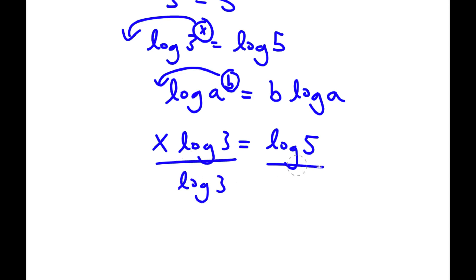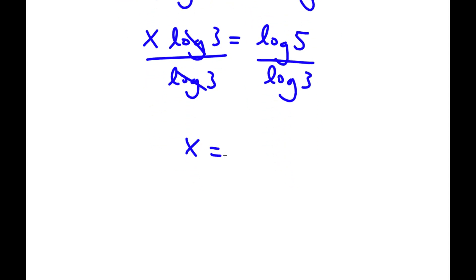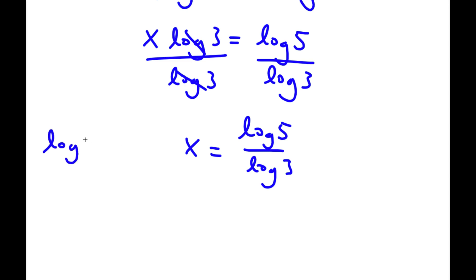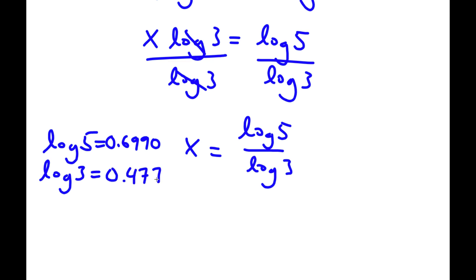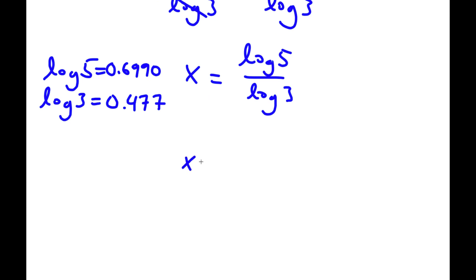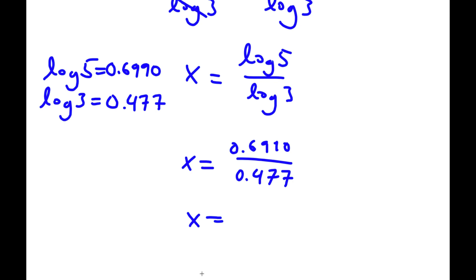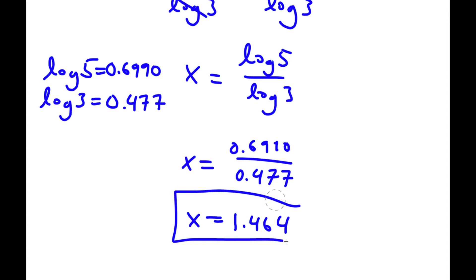Now I can divide both sides by log 3. These two cancel out, and I'll be left with x is equal to log 5 over log 3. Now log 5 is equal to 0.6990, and log 3 is equal to 0.477. So now I have x equal to 0.6990 over 0.477, and this is equal to approximately 1.464. So 1.464 is our answer.